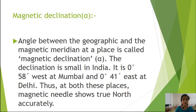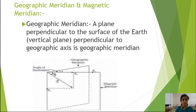The next parameter is magnetic declination, denoted by the letter alpha. The angle between the geographic meridian and the magnetic meridian at a place is called magnetic declination alpha. The declination is small in India — it is 0 degrees 58 minutes west at Mumbai and 0 degrees 41 minutes east at Delhi. Thus at both these places, a magnetic needle shows true north accurately.